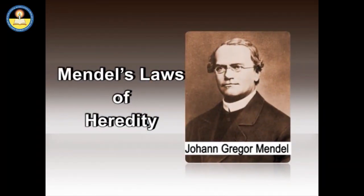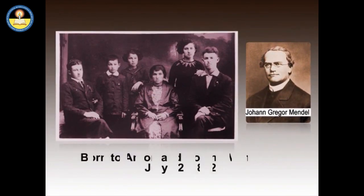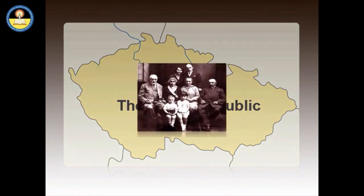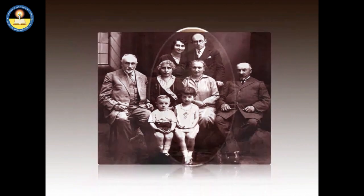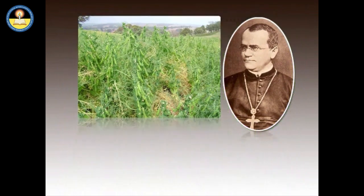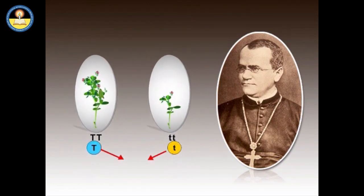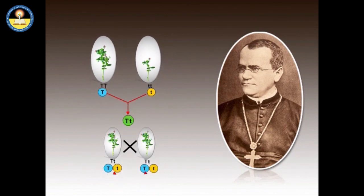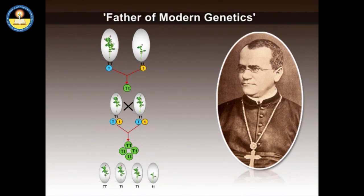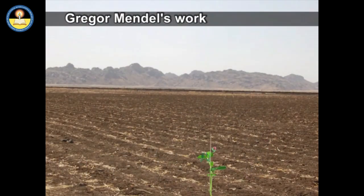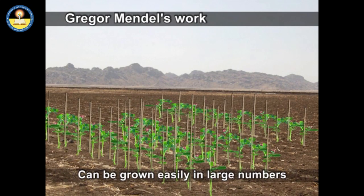Mendel's Law of Heredity. Johan Gregor Mendel was born to Anton and Rosine Mendel on July 22, 1822 in the Czech Republic. He was born into a family of Moravian peasants and proved to be very talented. During his childhood, Mendel worked as a gardener and studied beekeeping. Mendel demonstrated that the inheritance of certain traits in pea plants follows particular patterns, now referred to as the laws of heredity. Gregor Mendel is also known as the father of modern genetics. He selected the common garden pea plant, Pisum sativum, for his research because it can be grown easily in large numbers in very little time.